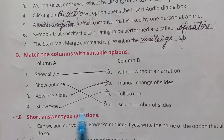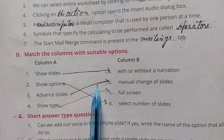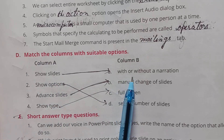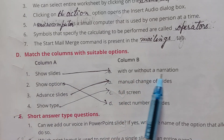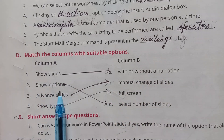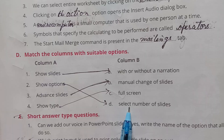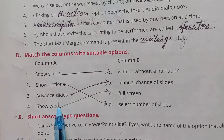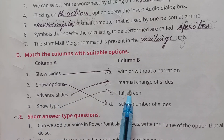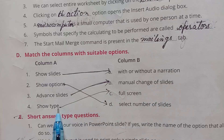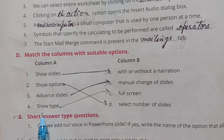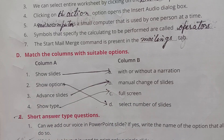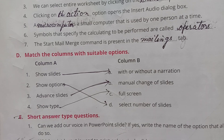D. Match the columns with suitable options. Show slide with or without narration: Show Type. Select number of slides: Show Options. Add one slide: see. Manual change of slides: Full screen.